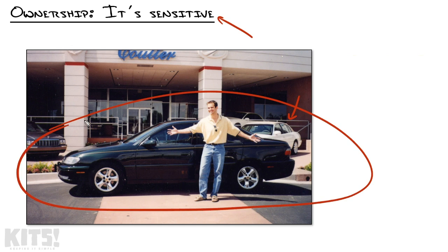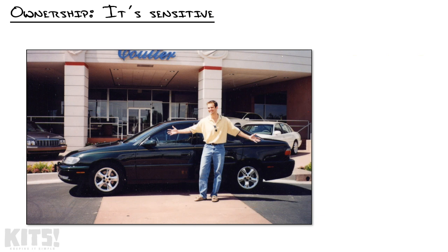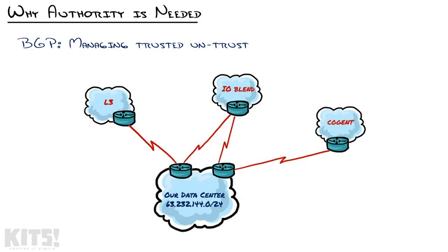When you buy a car, it becomes your responsibility. You now own all the good and the bad that happens to that vehicle. That was a Cadillac Catera — they only made them for a couple of years because there were so many problems with them; it was just a bad design. And where did that leave me? I own it. Every problem, every issue is my responsibility to solve. And it's the same way when it comes to IP addresses.